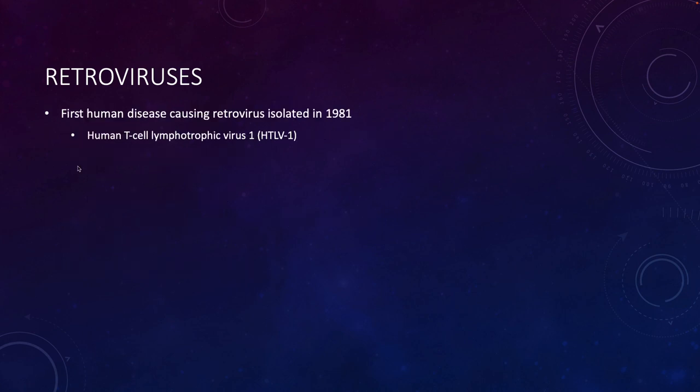The first human disease that was caused by a retrovirus is a type of T-cell lymphotrophic disease, and the virus was human T-cell lymphotrophic virus number one.